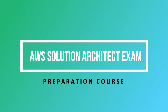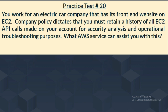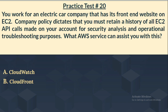The next question: You work for an electric car company with a front-end website on EC2. Company policy requires retaining a history of all EC2 API calls for security analysis and operational troubleshooting. What AWS service can assist you? Option A: CloudWatch. Option B: CloudFront. Option C: CloudTrail. Option D: CloudTracker.